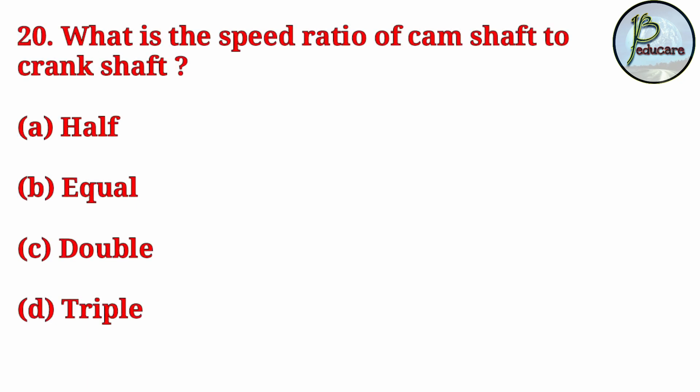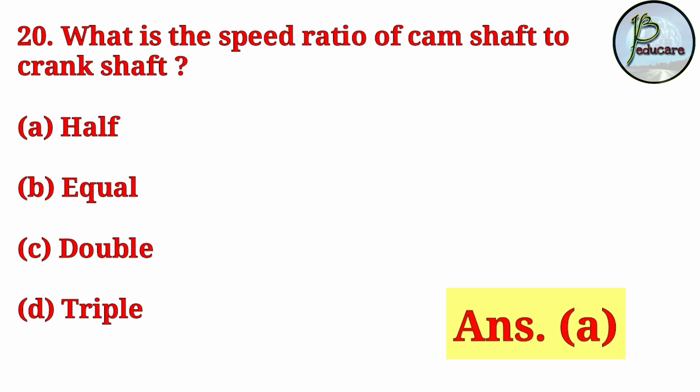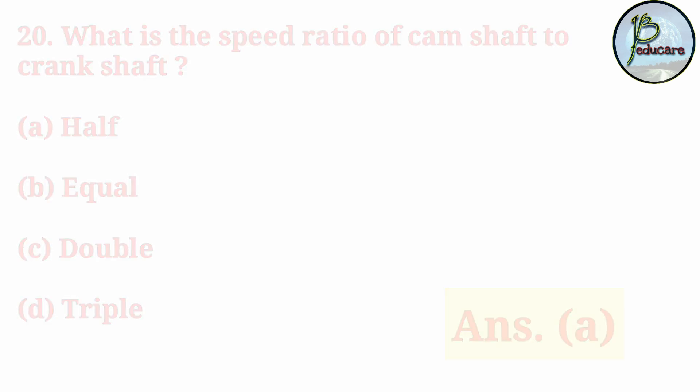What is the speed ratio of camshaft to crankshaft? The speed ratio of camshaft to crankshaft — the correct answer is Answer A — half. That means when the camshaft completes one rotation, the crankshaft completes two rotations.